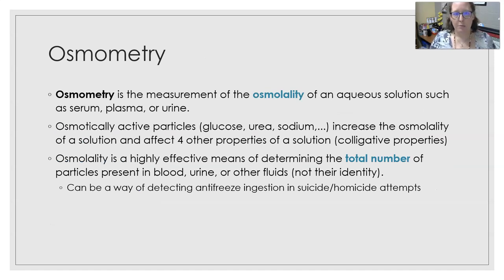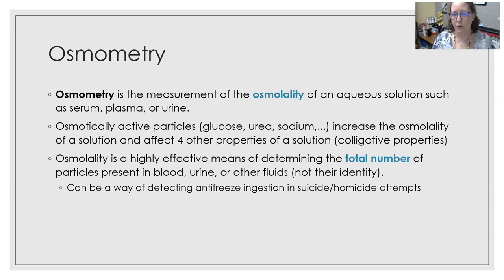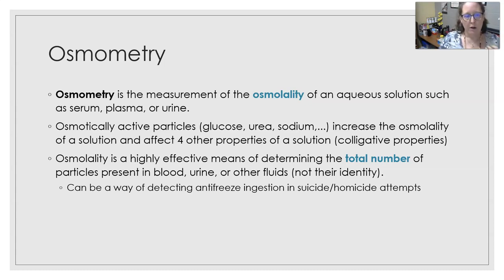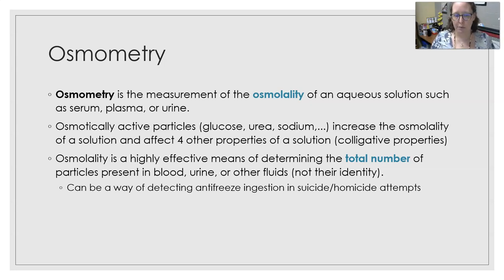Osmometry is a measurement of the osmolality of an aqueous solution, such as serum, plasma, or urine. Osmotically active particles such as glucose, urea, and sodium will increase the osmolality of the solution and affect the four colligative properties. Osmolality is a highly effective means of determining the total number of particles present in blood, urine, or other fluid — but not the identity of those particles.